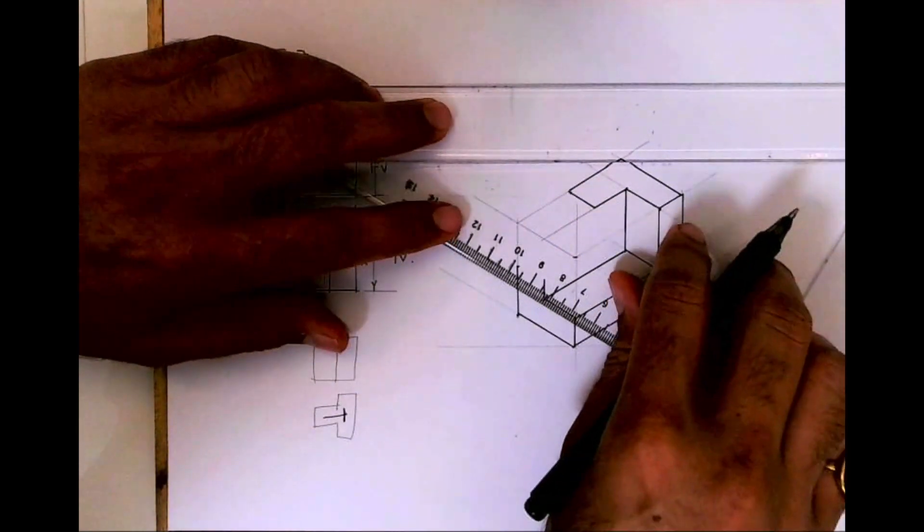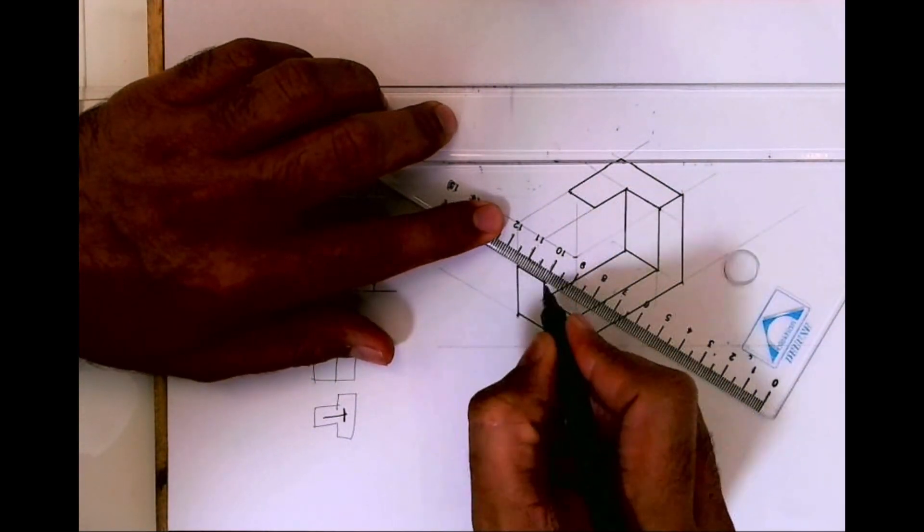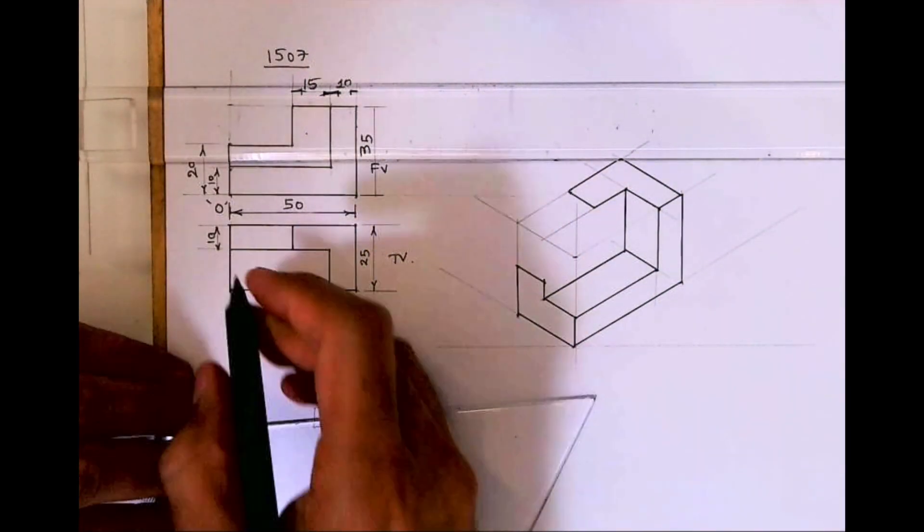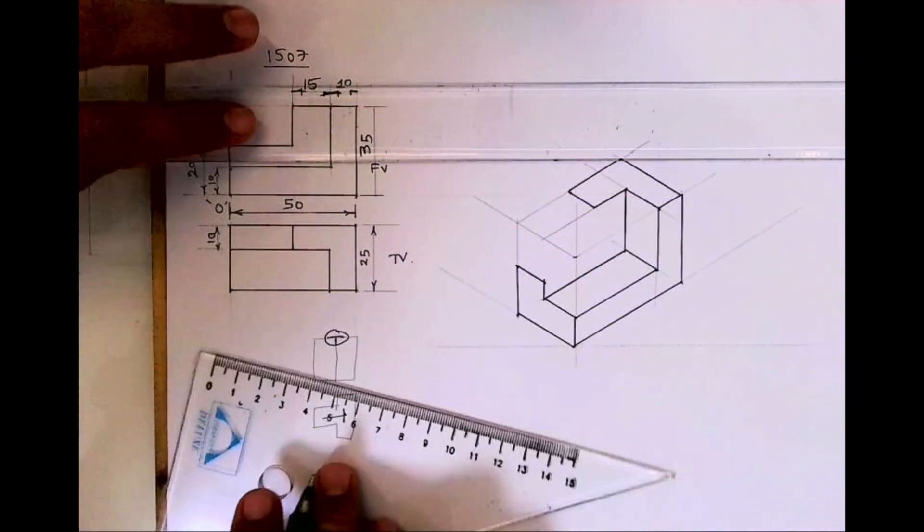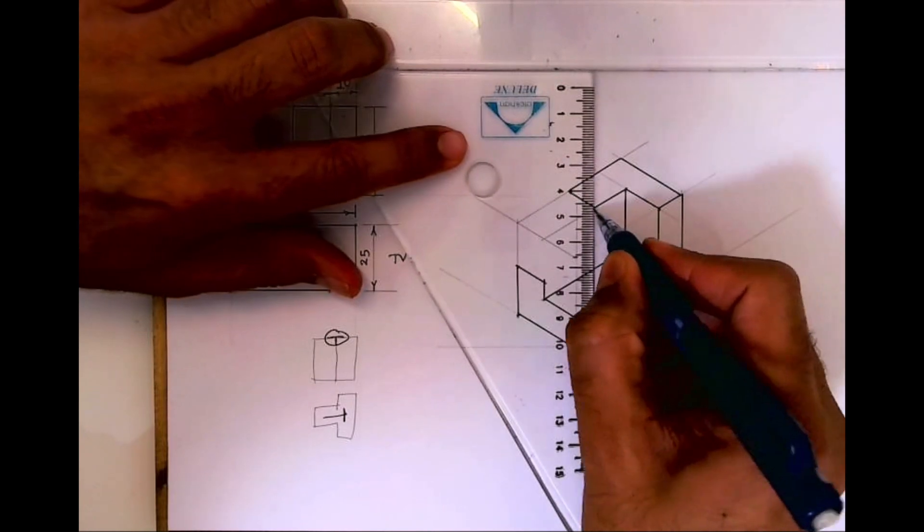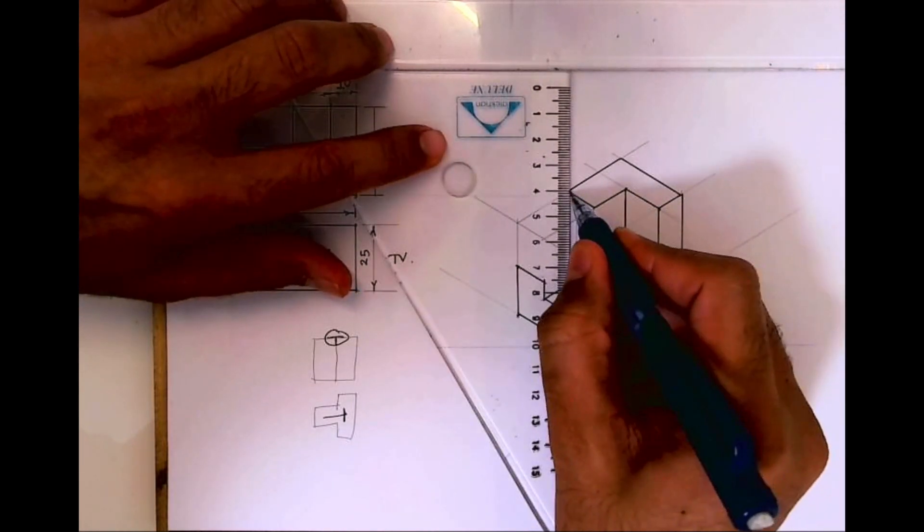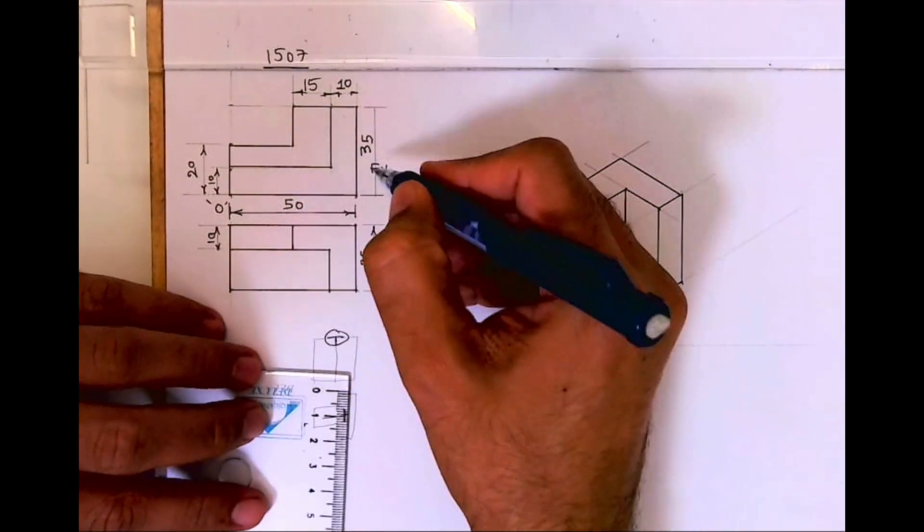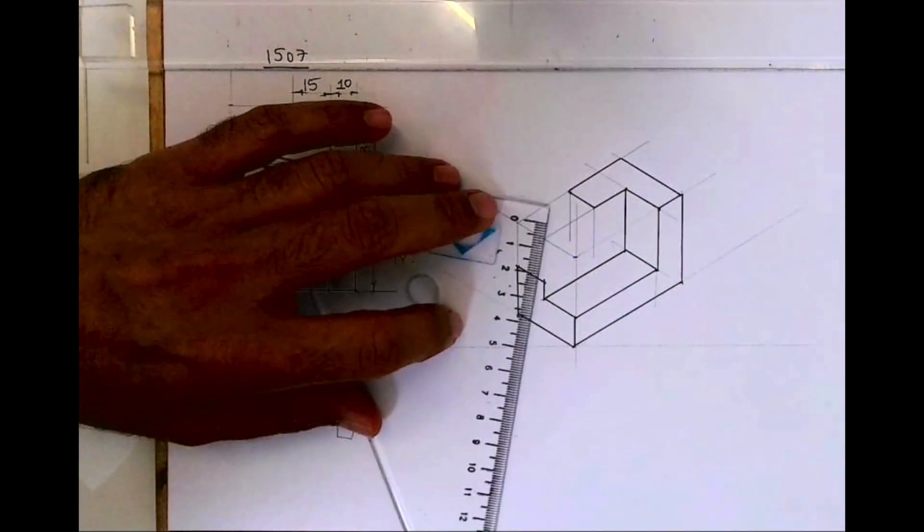From here 10, then we can join. Then again you go down from here. How much I have to go down? 35 minus 20 is 15.